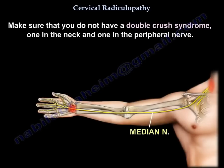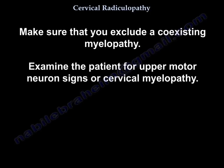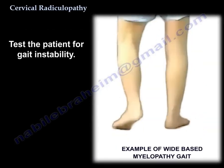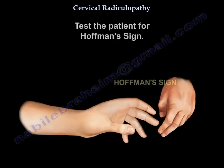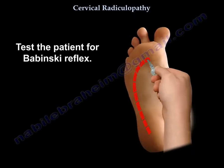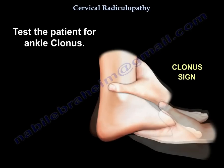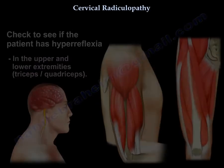Make sure you don't have a double crush syndrome — one compression in the neck and one in the peripheral nerve. Differentiate radiculopathy from myelopathy and exclude coexisting myelopathy. Examine the patient for upper motor neuron signs: test for gait instability, the Hoffmann sign, Babinski sign, clonus, and hyperreflexia.